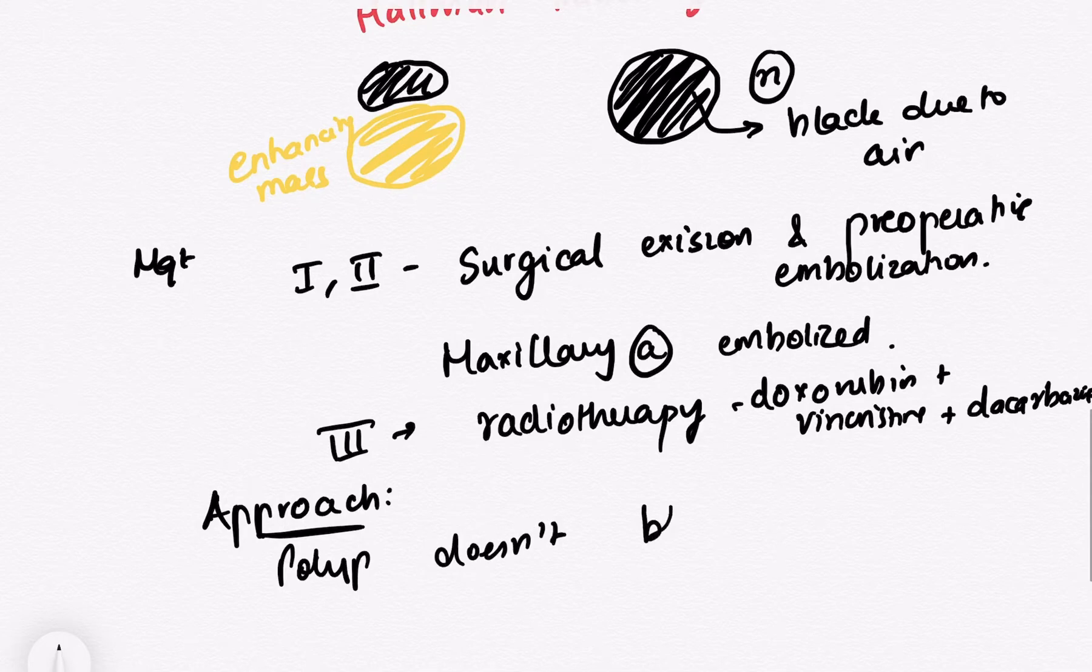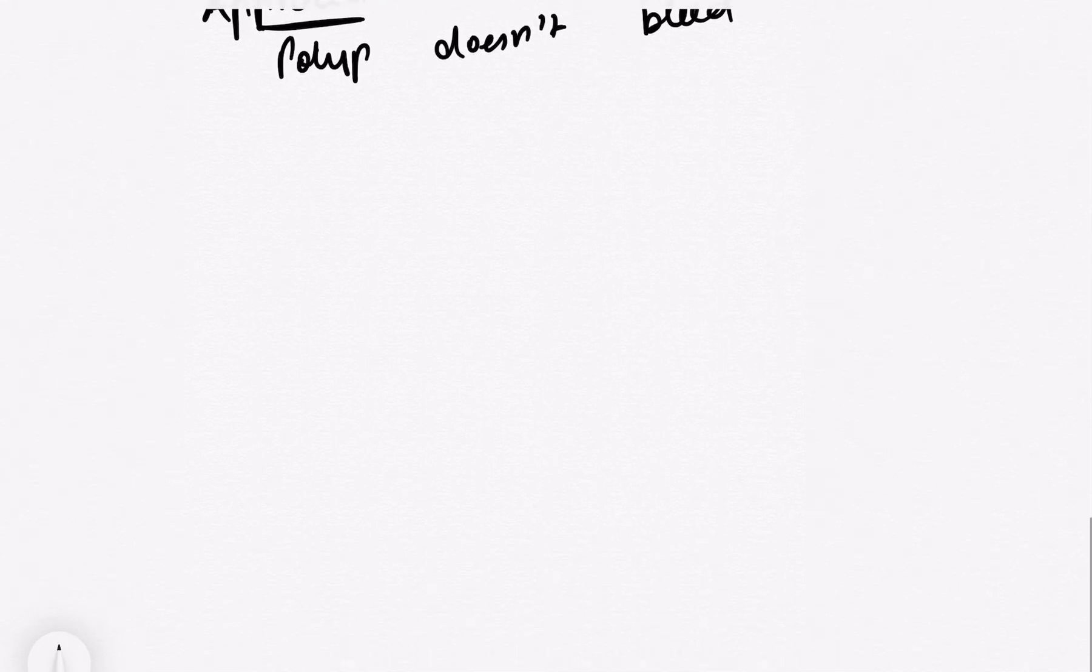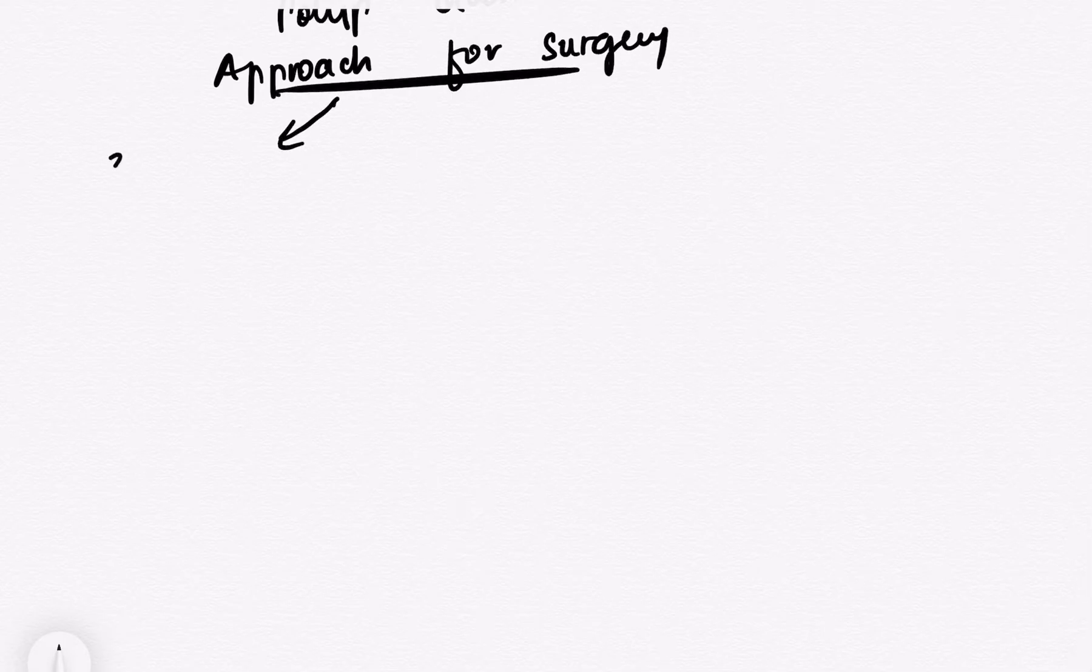So basically, the patient came, you took an enhanced CT scan, you saw Holman Miller's sign, and now you think that I want to manage this patient. So you know if stage 1 and 2 is there, you will do surgical excision. If stage 3 is there, you will do radiotherapy.